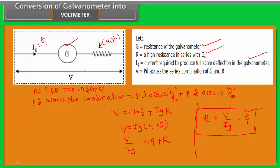For example, for 1 volt, 2 volt, 3 volt, the corresponding value of high resistance is placed in series with the coil of the moving coil galvanometer to convert it into a voltmeter. This is the procedure of the conversion of galvanometer into voltmeter.